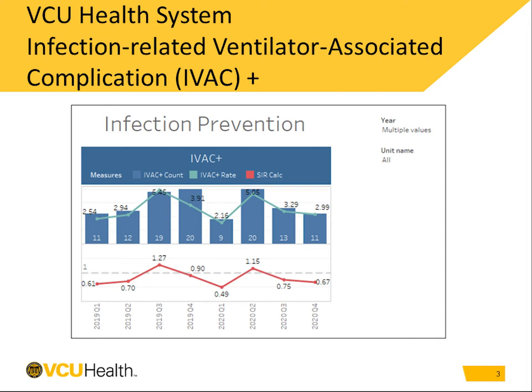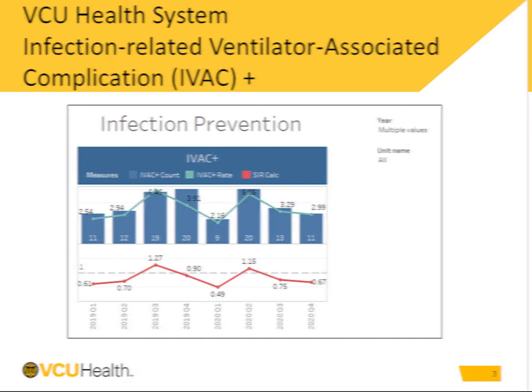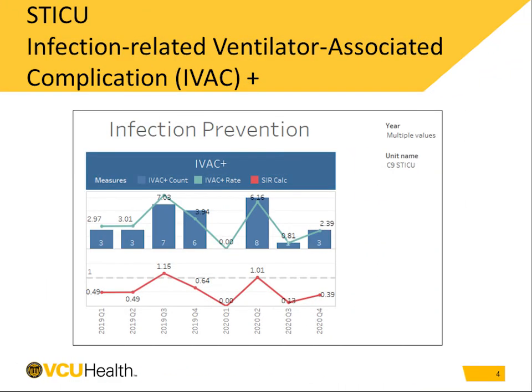You can see that the SIR for quarter 4 was 0.67, so less than 1, meaning we had fewer IVACs than predicted. This table shows data specific to the surgical trauma ICU. Looking at the data in this way is helpful to trend against ourselves and other institutions of the same size. You can see the SIR for quarter 4 was 0.39, so less than 1, so we had fewer IVACs than predicted.